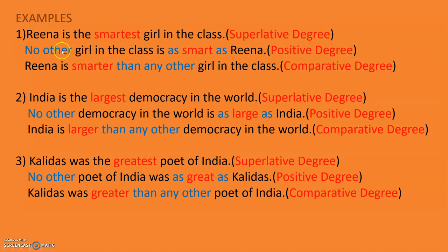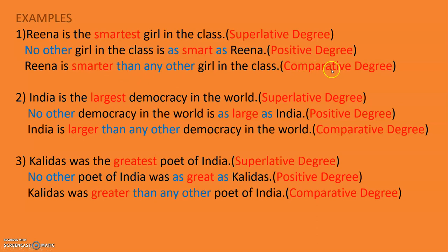Comparative degree will be: Reena is smarter — ER comes here — than any other girl in the class. Because there are no other girls who are equally smart. The word 'than' always comes in comparative degree. So you have to pay importance to all this: 'than any other girl in the class.'